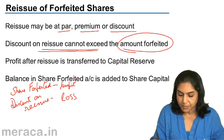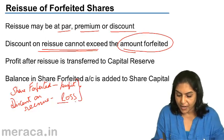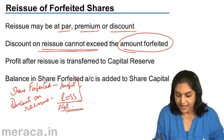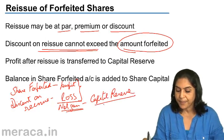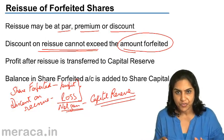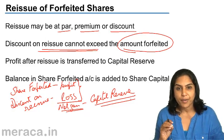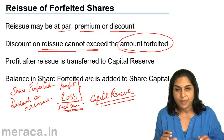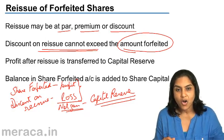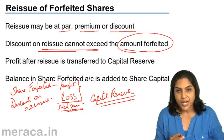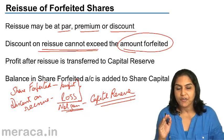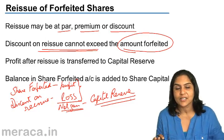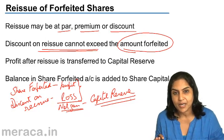The shares forfeited account represents a profit; the discount on reissue is the loss. The net gain — profit minus loss — is transferred to the capital reserve account. When shares are forfeited, the balance in the shares forfeited account represents a net gain on forfeiture, since it is the amount received on shares now cancelled that is not refunded to the shareholder. When these shares are reissued, any remaining balance in the shares forfeited account is transferred to the capital reserve account.